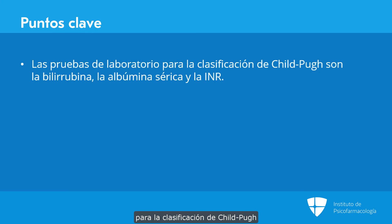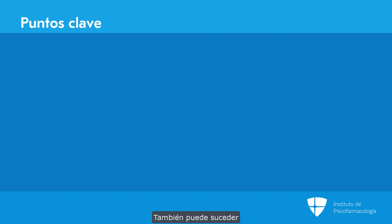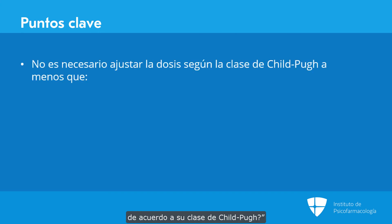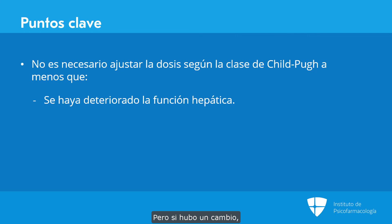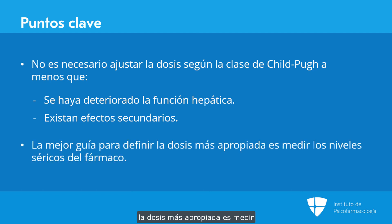The labs for Child-Pugh are bilirubin, serum albumin, and INR. AST and ALT have nothing to do with cirrhosis — they have to do with inflammation. Another important situation: if you have somebody already on a stable psychotropic dosage with no adverse effects, do you need to adjust their dose based on their Child-Pugh stage? Generally, if hepatic function has not deteriorated, you can leave them where they are. But if there's been a clear change — they're now Child-Pugh B and used to be A, or now Child-Pugh C and used to be B — it may be appropriate to reduce drug exposure, particularly if side effects are present. In those circumstances, getting drug levels may be your best guide to the appropriate dose in the context of more advanced liver disease.